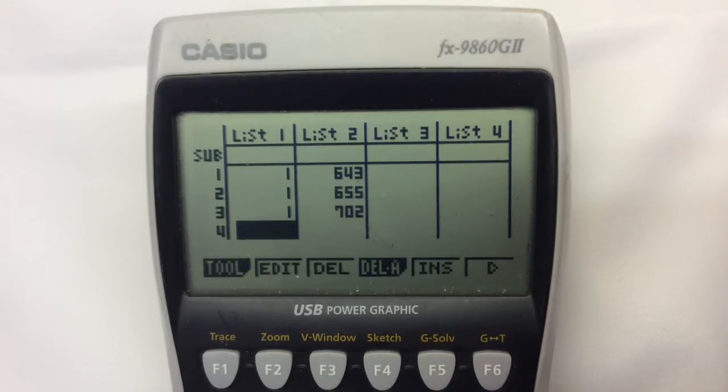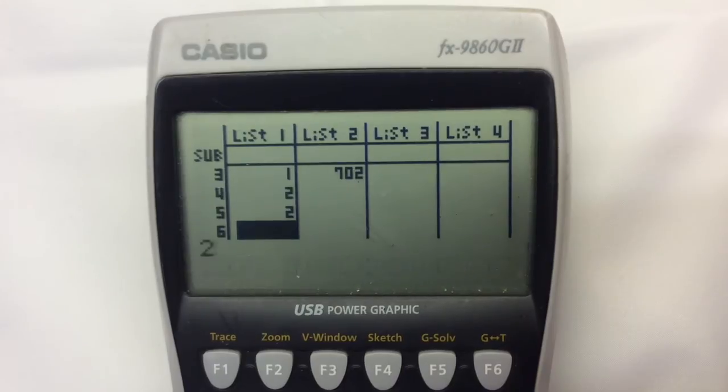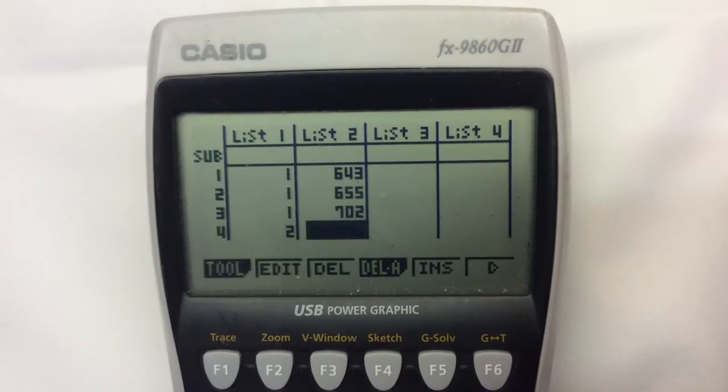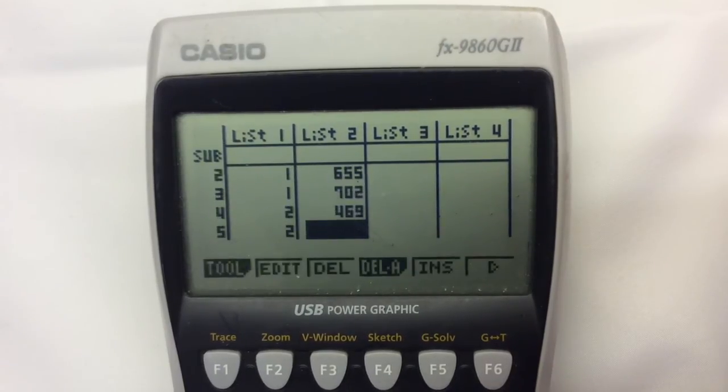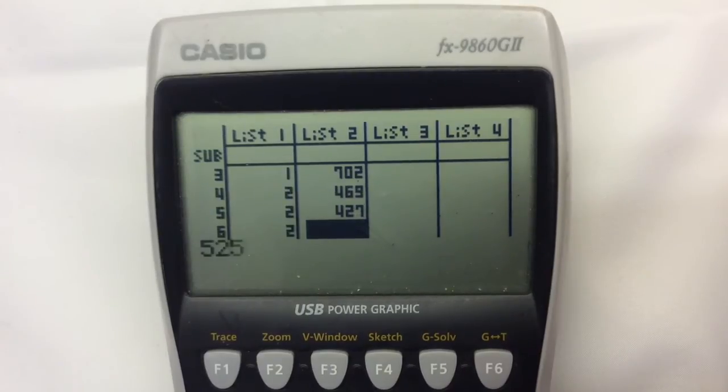We're going to go for our three pieces of data for the second group, which we'll call group two, and I'll put those in: 469, 427, 525.